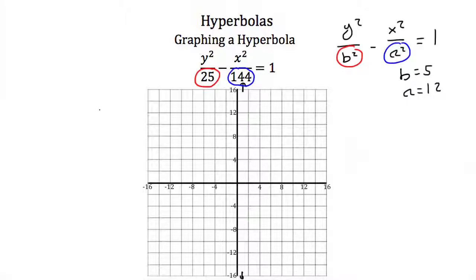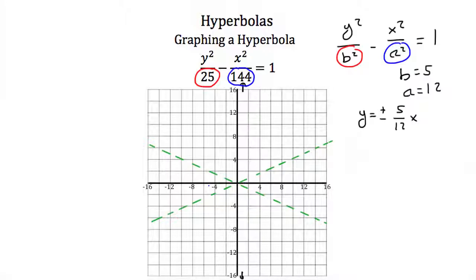This hyperbola has asymptotes y equals plus or minus 5/12 x. Since the hyperbola opens in the positive and negative y direction, the transverse axis is the y-axis, so the foci and vertices will be on that axis.